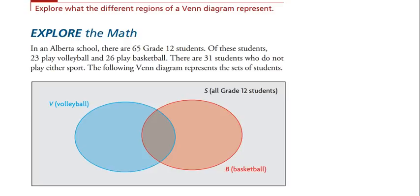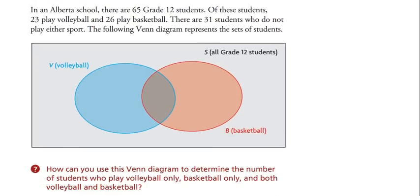In an Alberta school, there are 65 grade 12 students. Of these students, 23 play volleyball and 26 play basketball, and there are 31 students who do not play either sport. The Venn diagram represents the sets of students. You need to fill in the different areas: the number of students who play only volleyball, the number who play only basketball, and the number who play both volleyball and basketball.